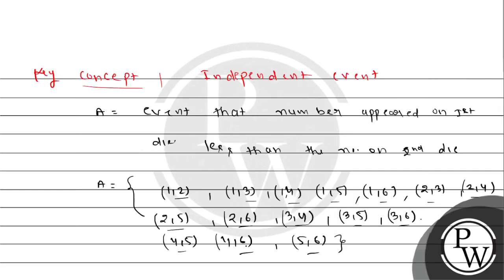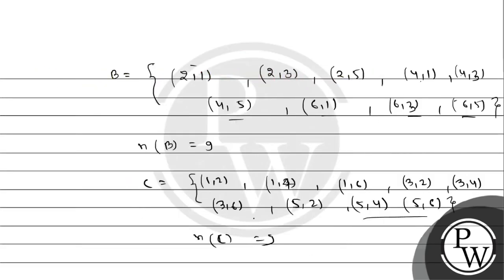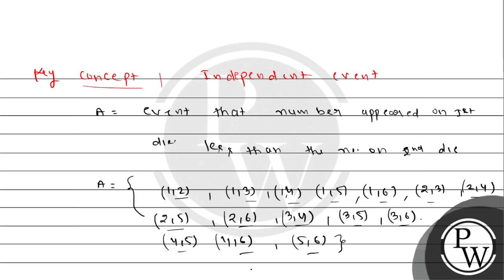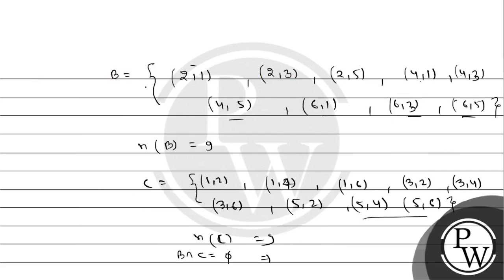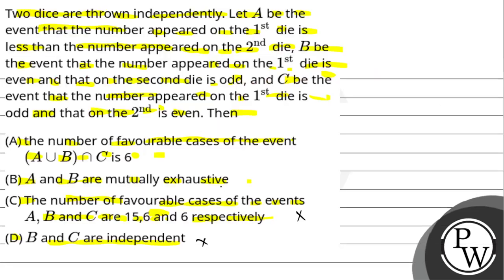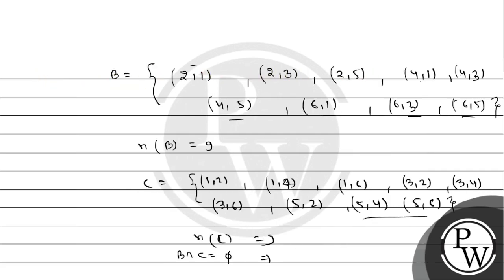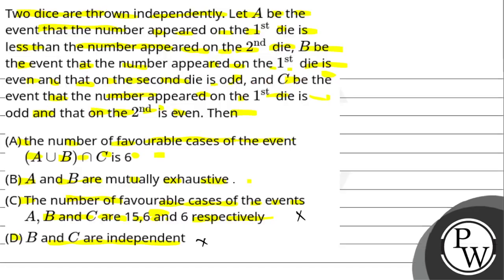Now checking the options: the favorable cases are 15, 9, 9 — not 15, 6, 6 as stated, so that option is incorrect. For B and C being independent: B∩C is empty (no common elements), so their intersection probability is 0, meaning they are not independent. For A and B being exhaustive: (2,3) belongs to both A and B, so A∩B is not empty — they are not exhaustive either.